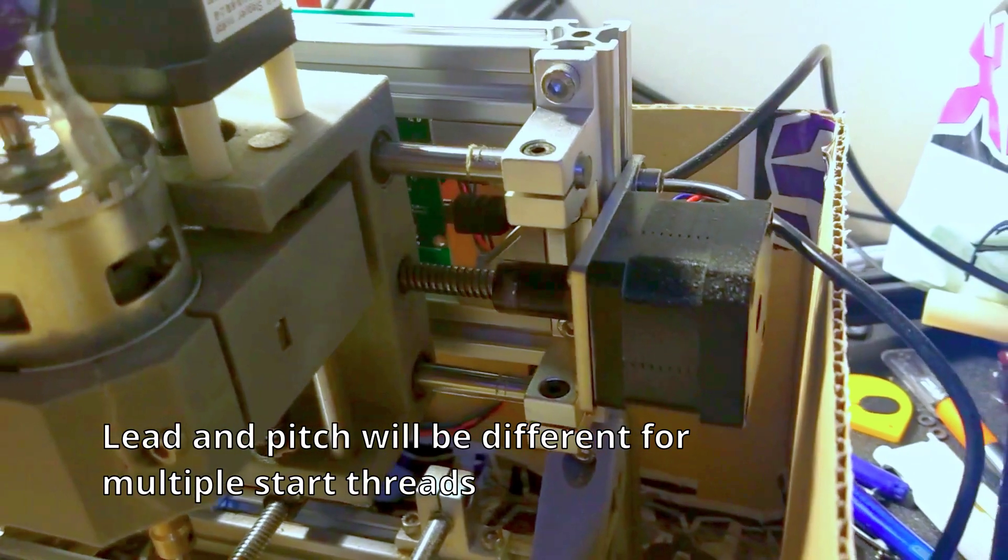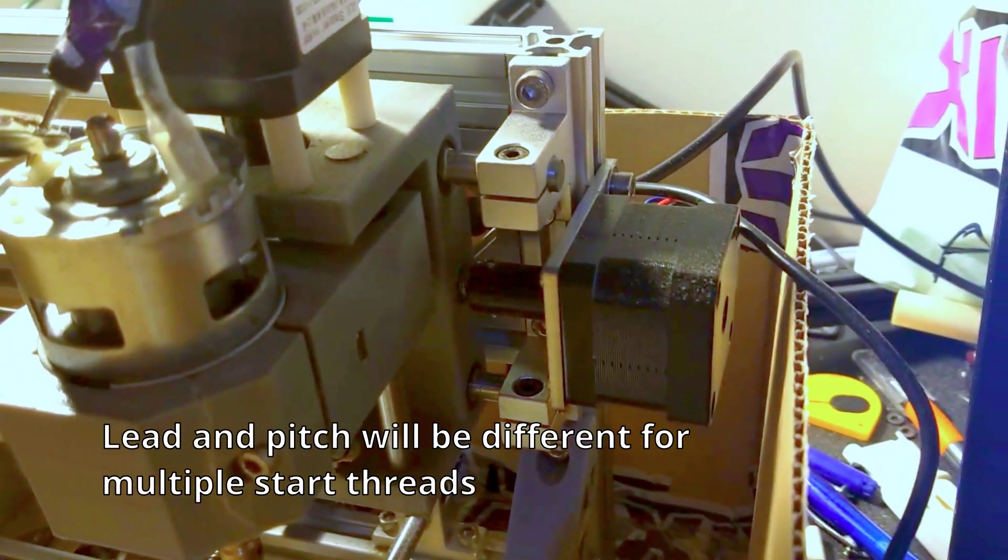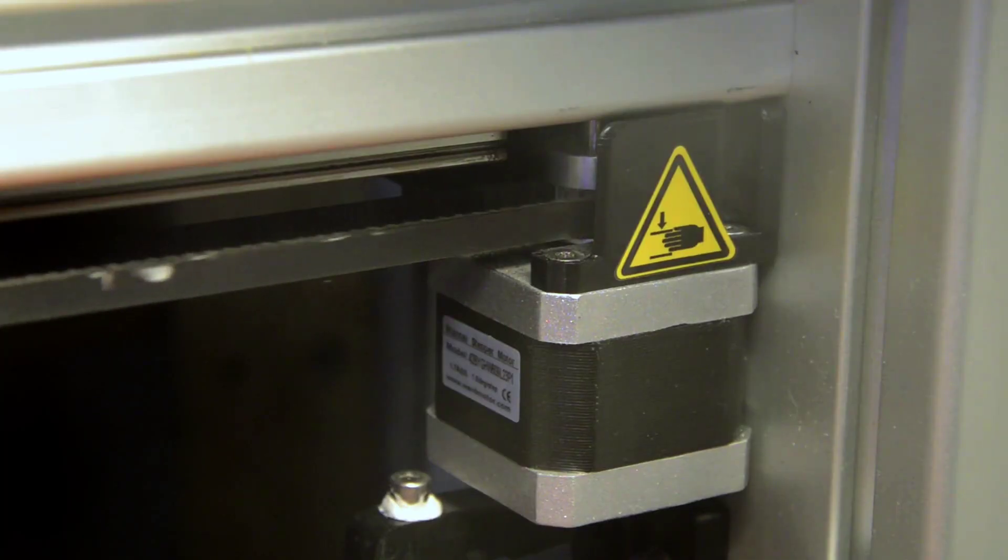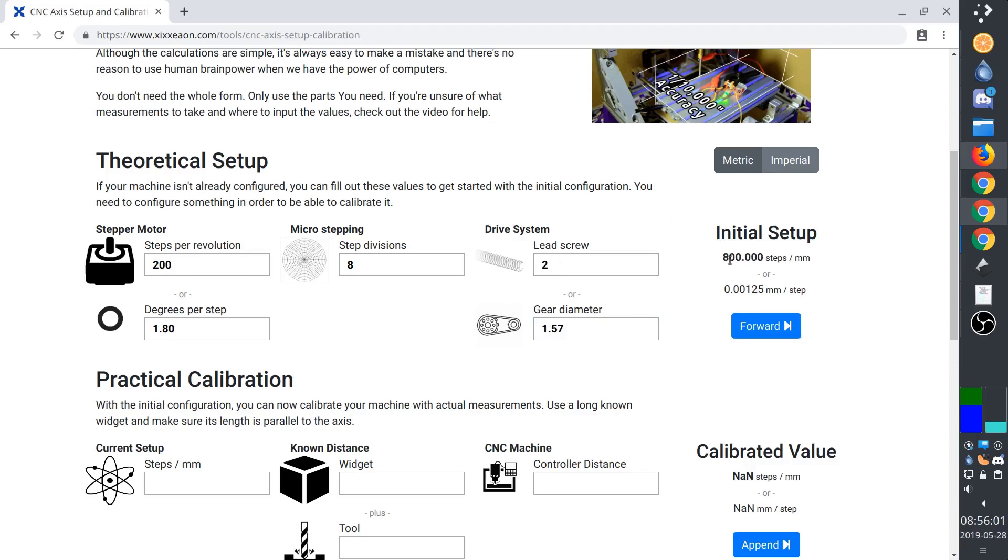Lead is how far the carriage will move for one full turn of the screw. If you have a basic gear and belt or rack system, you can enter the gear reference diameter instead. And so I'll set this axis to 800 steps per millimeter.